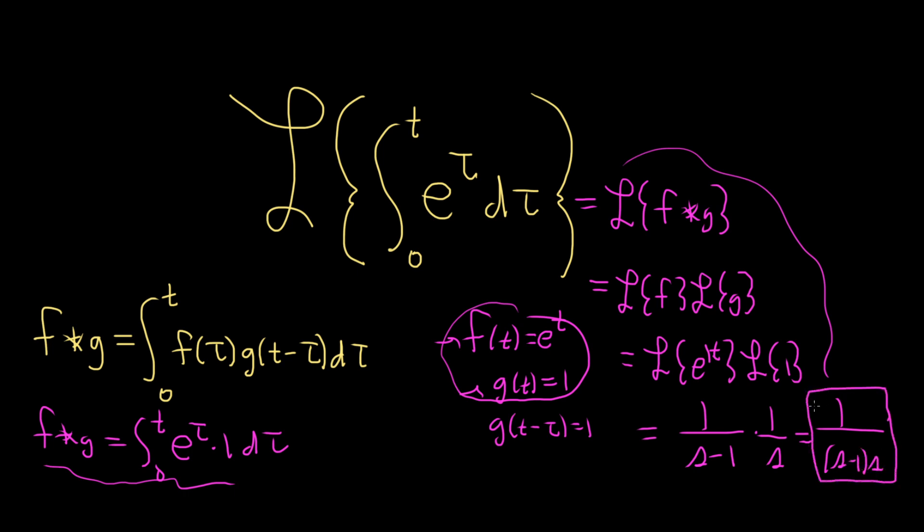Kind of an overly simplistic example, but it is a little bit tricky because you have to identify g of t as being equal to 1. So a little bit different. I hope this video has been helpful. Good luck.